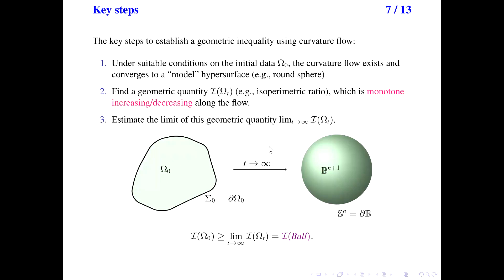From the above example, we see that the key steps to establish a geometric inequality using curvature flow are the following. First, we need to show that under some conditions on the initial data, the curvature flow converges to a model hypersurface, for example the round sphere. Second, we need to find a geometric quantity which is monotone increasing or decreasing along the flow, and we also need to estimate the limit of this geometric quantity. Once we have these three steps, we can compare the initial value of the geometric quantity with its limit value and derive the geometric inequality.